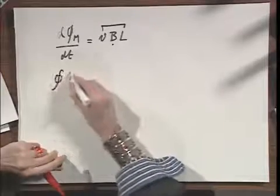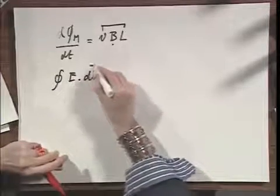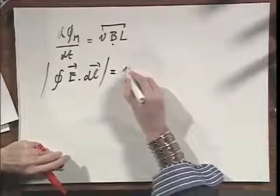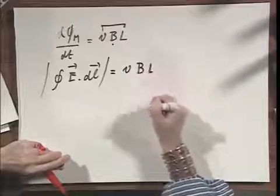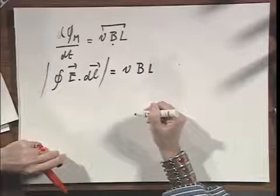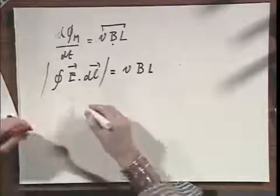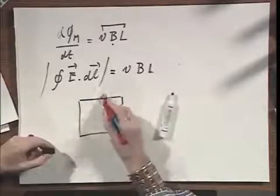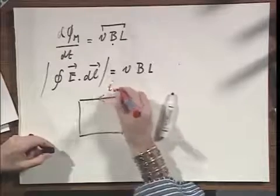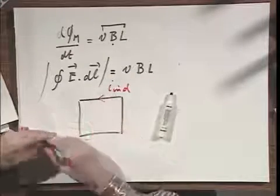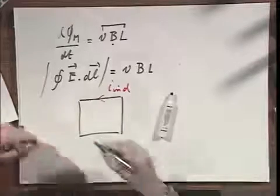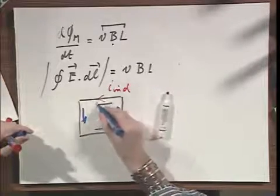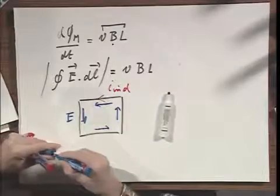And so the closed loop integral of E·dl, along the loop that I have chosen, and let's not worry about signs because we know the direction anyhow, equals VBL. And we already determined that in the loop, when it starts to enter the magnetic field, the induced current will be in this direction. So the induced electric field will be in this direction. That's the E field in this loop.